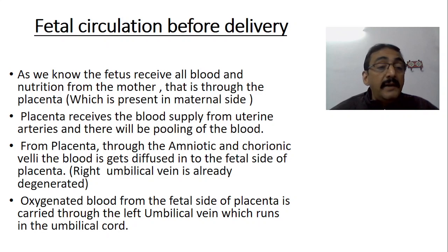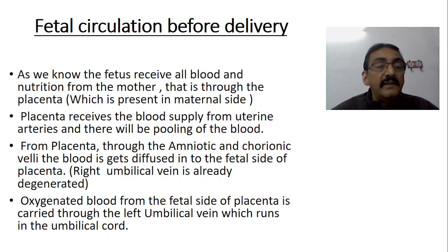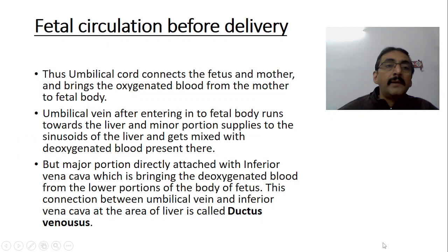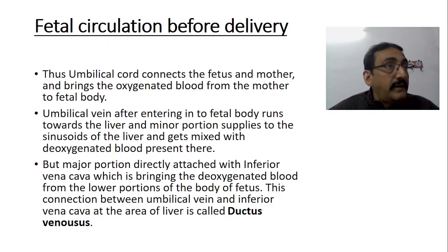The right umbilical vein has already degenerated, so only the left umbilical vein is present. This left umbilical vein carries the oxygenated blood from the fetal side of the placenta to the fetus through the umbilical cord. Very importantly, a vein is carrying the pure blood. Thus the umbilical cord connects the fetus to the mother and brings oxygenated blood from the mother to the fetal body.